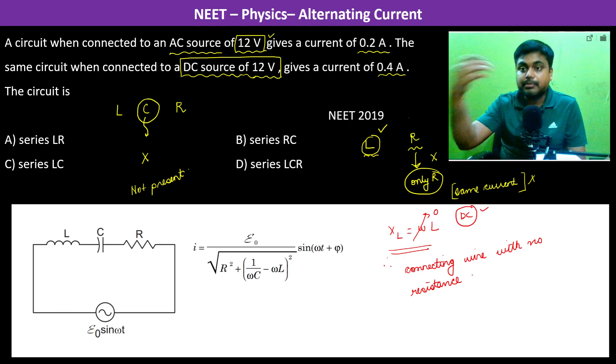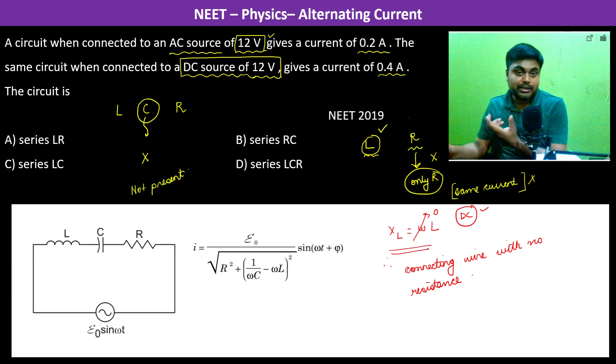So, current has increased in DC circuit. But yes, if only L is there, then it is like a short circuit. If L is like a short circuit, because it will act as a connecting wire.